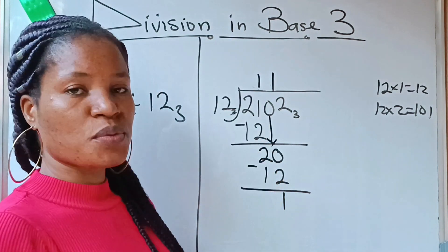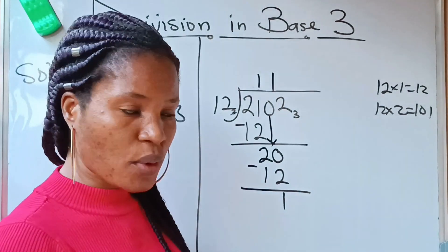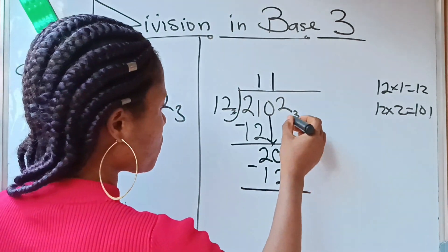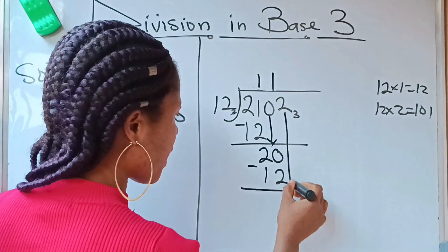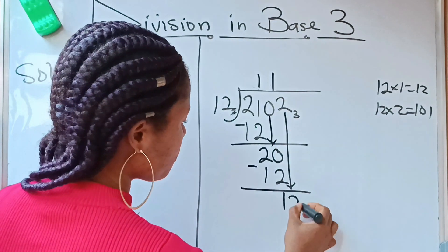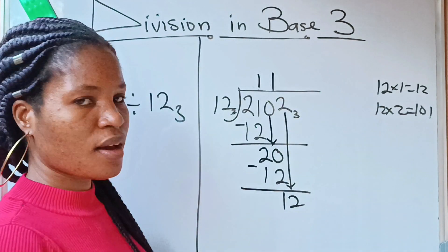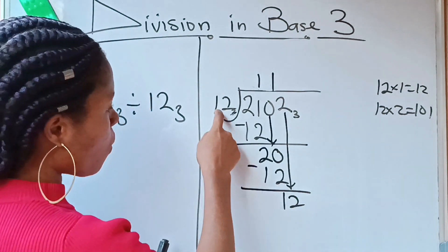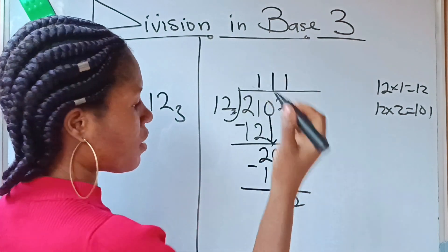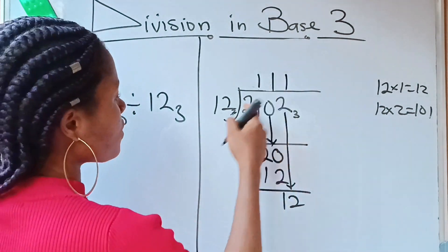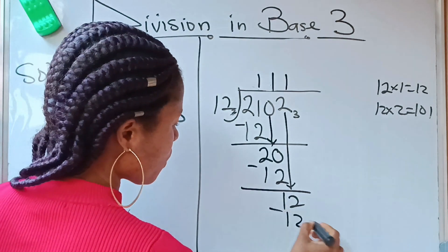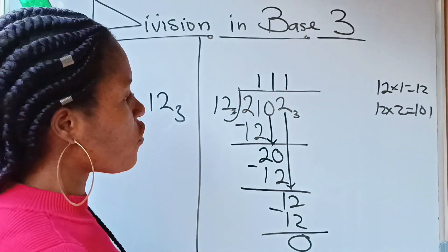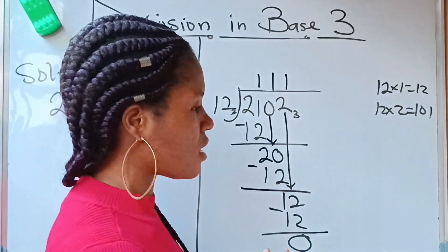We bring down the next value, which is 2, giving us 12. 12 divided by 12 is 1 again, so we write 1 in the quotient. 1 times 12 is 12. When you subtract, you get 0. We have gotten to our result.